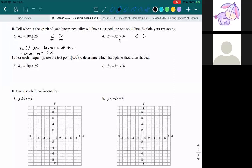This one's going to be, you guessed it, a dashed line. Dashed line because there was no equal to line.